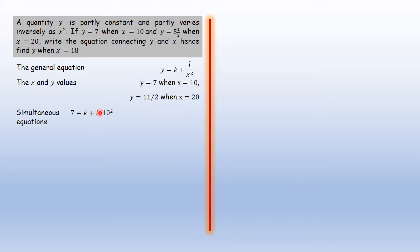And I have the first one here. We have y, you put it to be 7. And 10 squared, that's the value of x in this particular case. Putting it here, you get this, which simplifies to 7 = k + l/100.